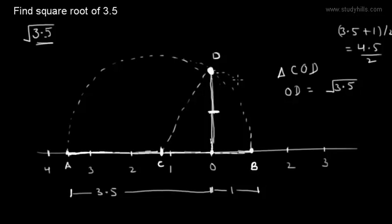Like this. This point will represent the square root of 3.5. This way we can find out the square root of any real number.